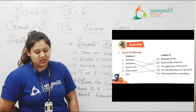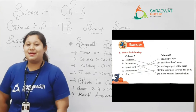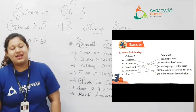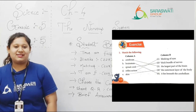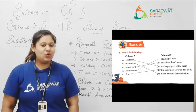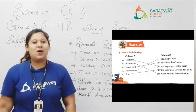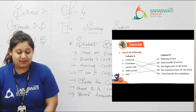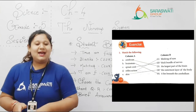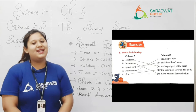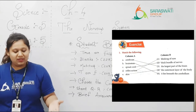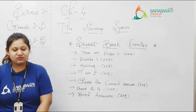Reflex action — an example is blinking of eyes. Achanak se brain ne command diya, usse pehle reflex action ka action hota hai — match D with number 1. Last one E, skin — the outermost layer of the body. Match E with number 4. Done, kids.